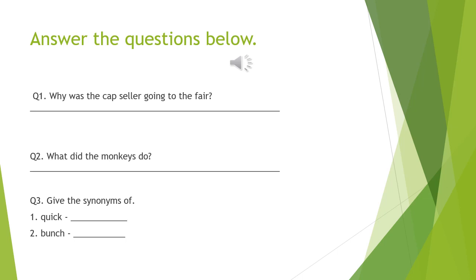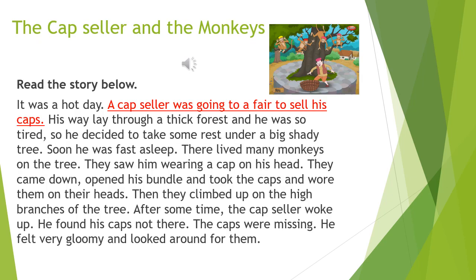Now all of these answers are in the passage itself, so we will go back to the passage to find the answers. Remember that all the answers to the questions in our reading comprehension are in the passage itself. The first question: Why was the cap seller going to the fair? You will find the answer in the second line of the passage: 'A cap seller was going to a fair to sell his caps.' Now you can take this line and write down your answer.